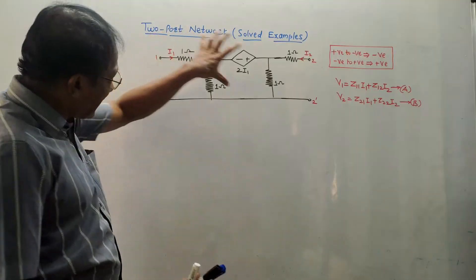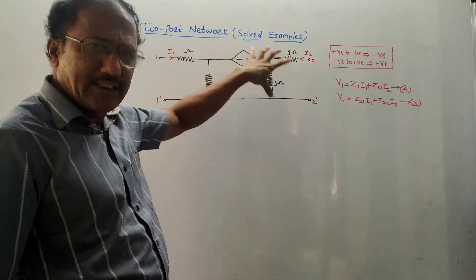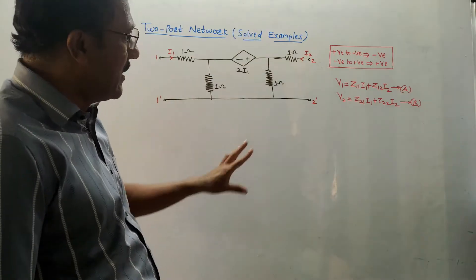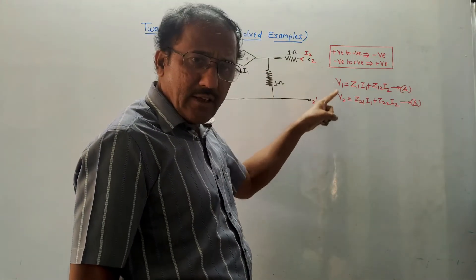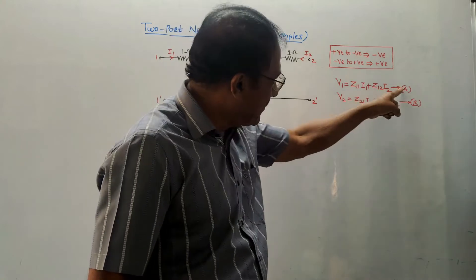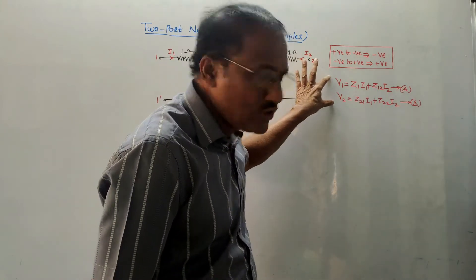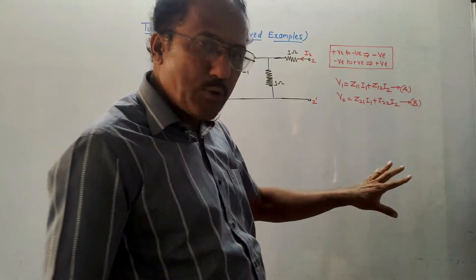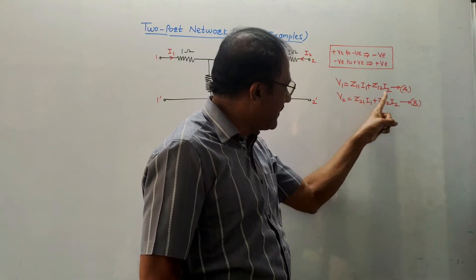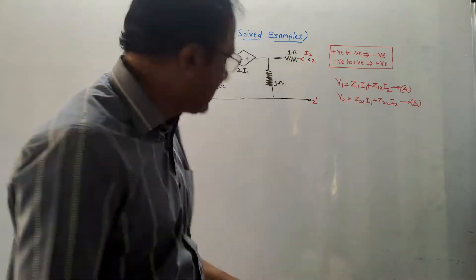First numerical: suppose it is asked to calculate the Z parameters, that is impedance parameters, of the given network. For reference, I have written the defining equations of Z parameters — equation A and B. These are the defining equations of Z parameters. We have to calculate the value of Z11, Z12, Z21, and Z22, which are known as Z parameters.